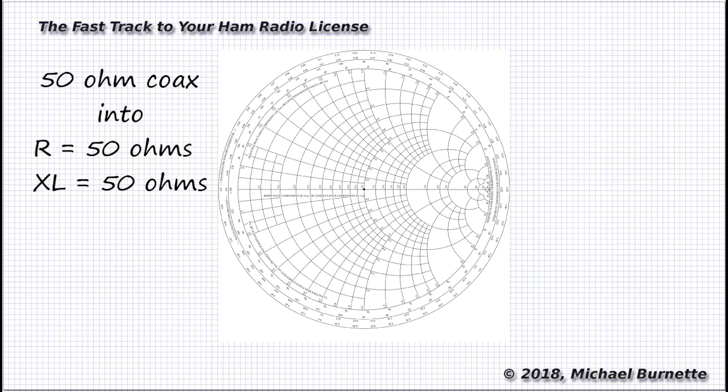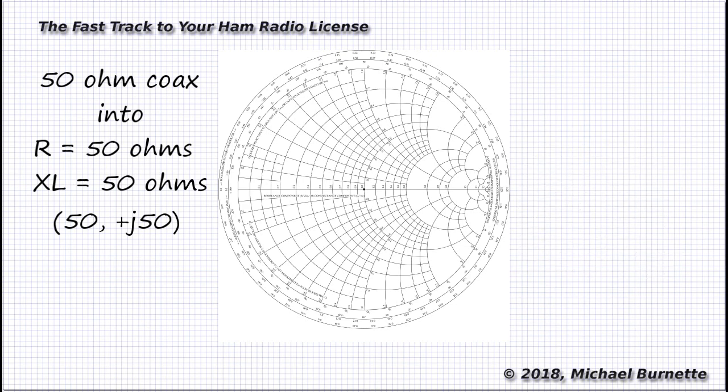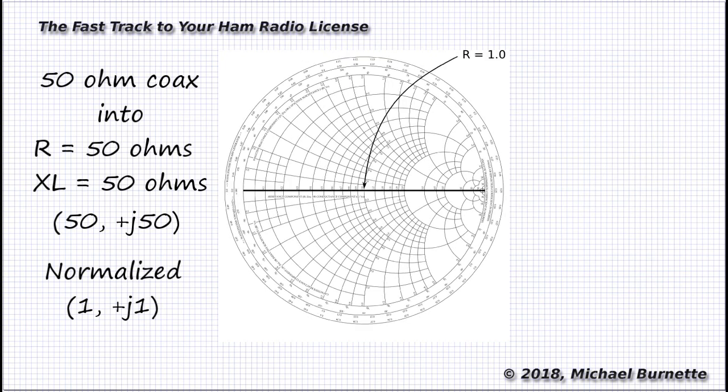To keep numbers simple, let's say our load has a 50 ohm resistance and 50 ohms of inductive reactance. Formally, those are coordinates of 50 and +j50. Step one is to normalize our values. We divide the resistance and the reactance by the normalizing number of the chart, which is 50. That gives us coordinates of 1 and +j1. Next, we plot the resistance point on the resistance axis. It's easy enough to find. 1.0 is smack dab in the center of the resistance axis.